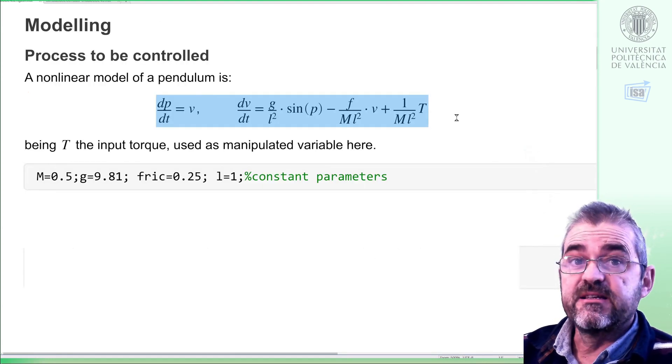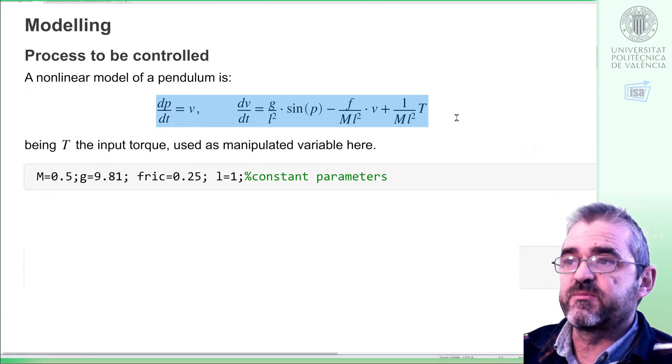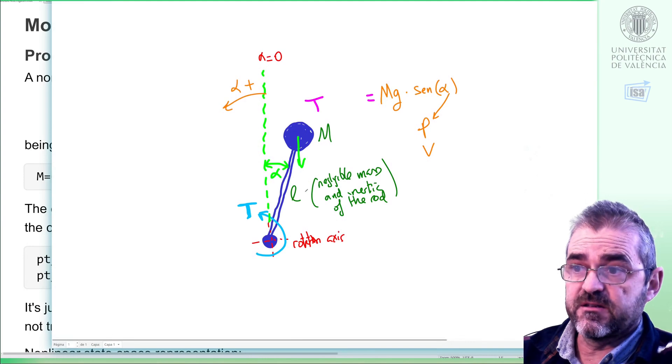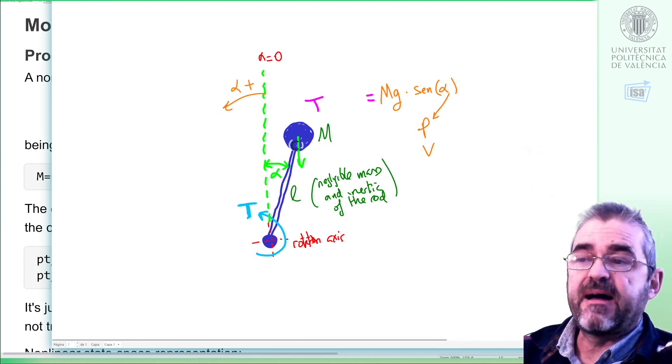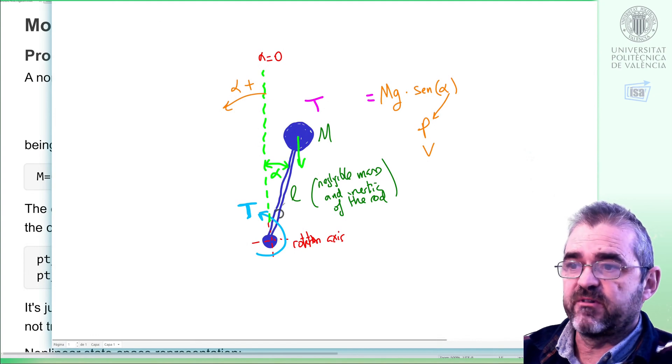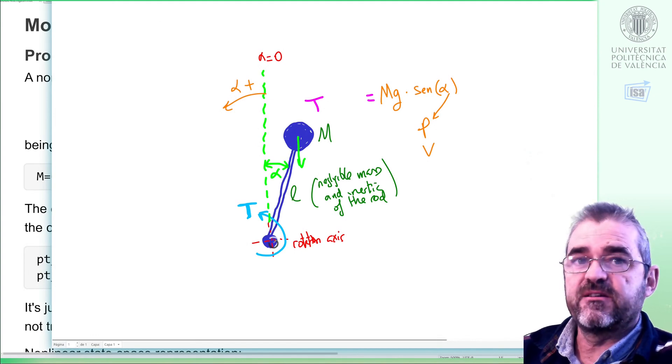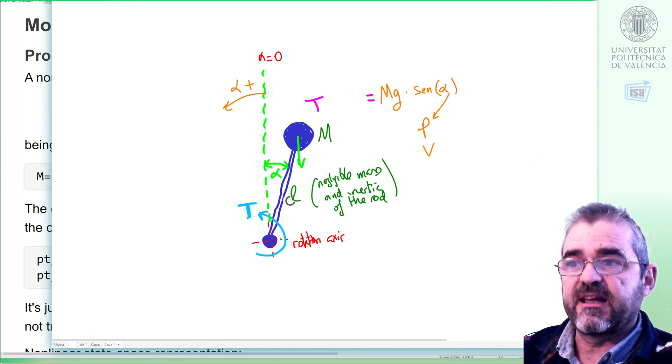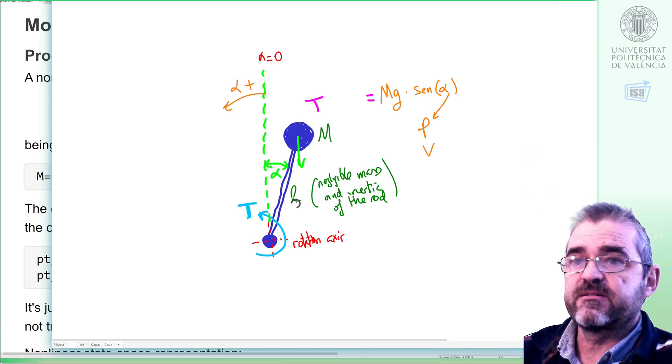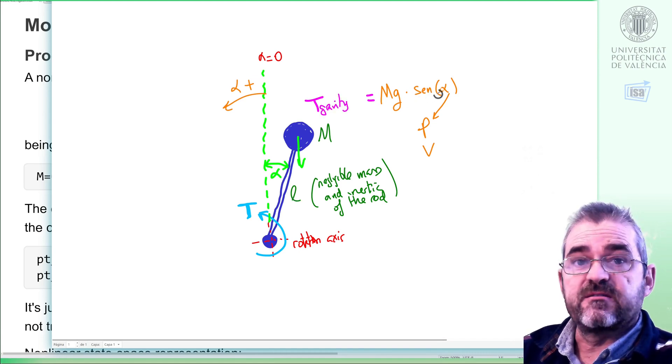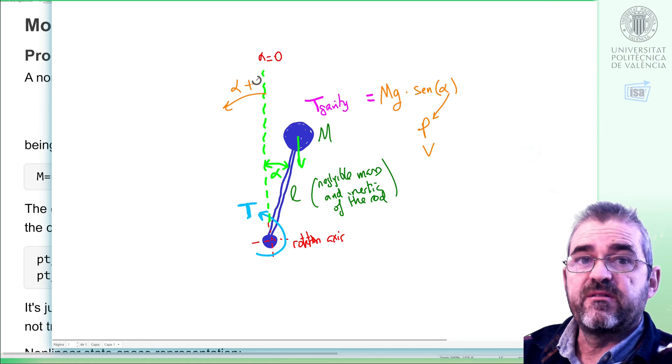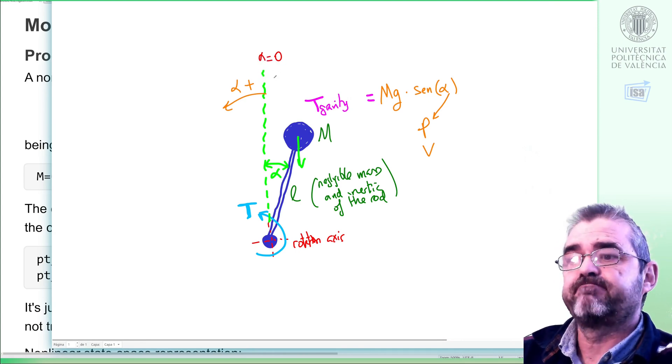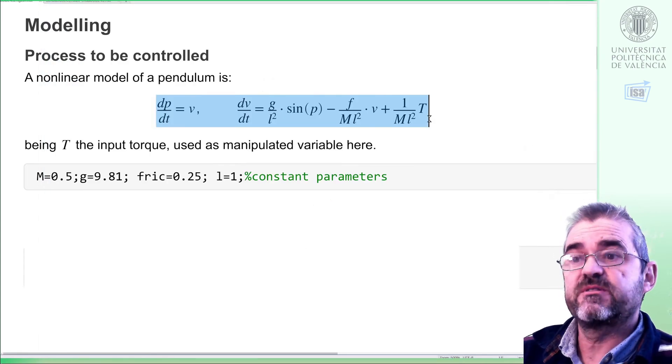These are the state equations: derivative of position equals speed, and derivative of speed equals acceleration of a pendulum, depicted in this figure, in which we have a mass which is joined to a rod of length L, articulated on a rotation axis. The rod itself, we will assume, has negligible mass or inertia. This will be the torque exerted by gravity, and zero will be the equilibrium in the upright unstable position. So this will be the nonlinear model we are going to simulate.